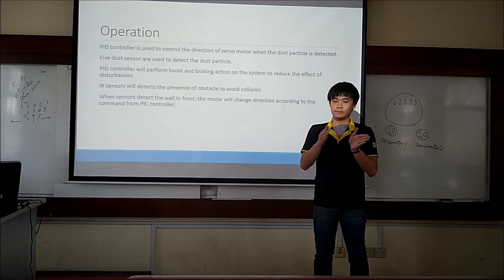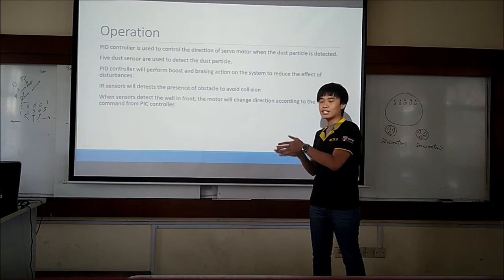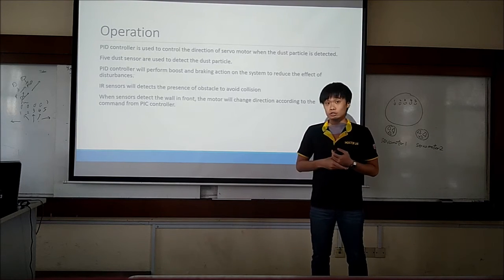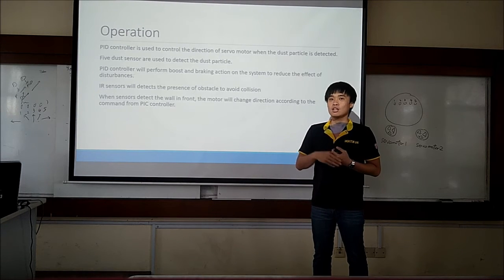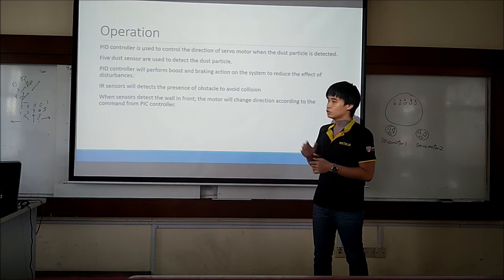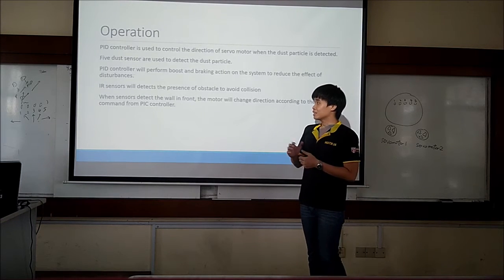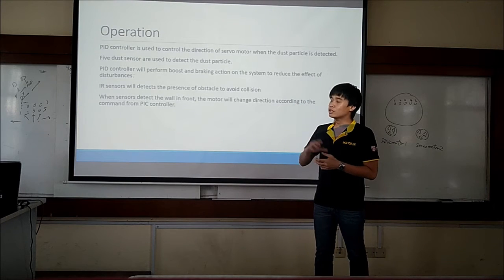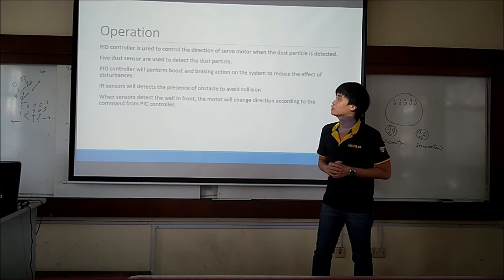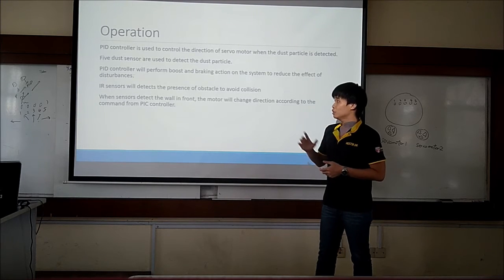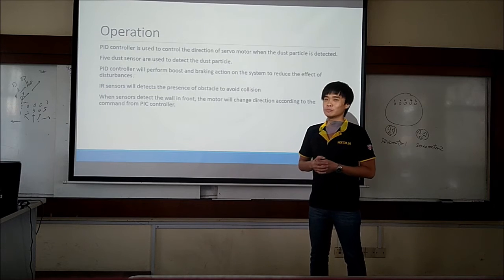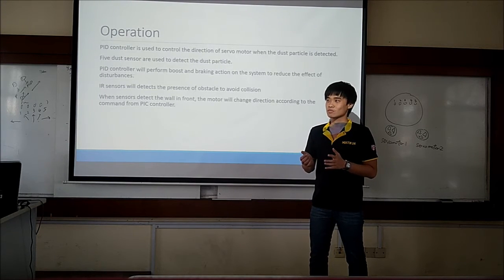The robot will move in a shorter time to the designated direction to reduce the effect of disturbances such as air conditioning force, airflow, or any external object which might change the output of the robot from the design position. Besides that, two types of sensors are used. First is the dust sensor, used to detect dust particles. The IR sensor — infrared sensor — is used to detect the presence of obstacles to avoid collision between the motor and the obstacle.